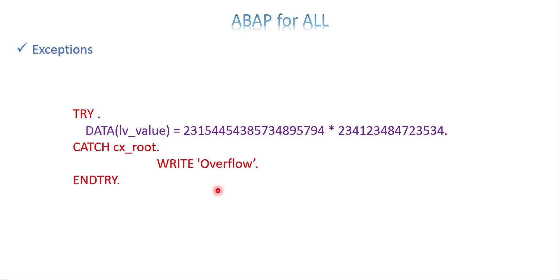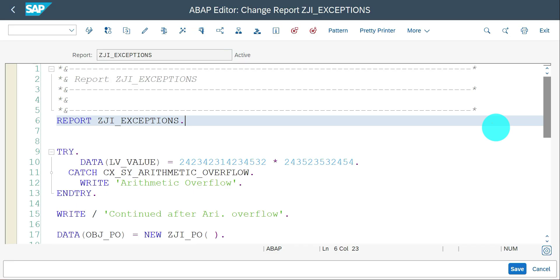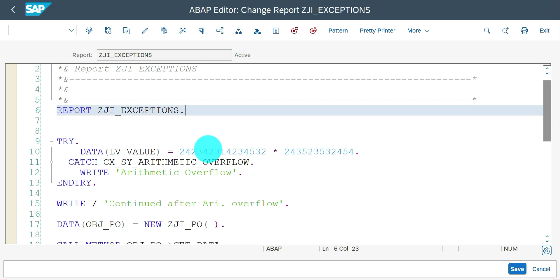There are two processes: process one is how to capture the exception, and process two is what to do next. I've explained only process one here. Process two depends on your need — it could be a message, a write statement, or an email. I will now show you the same in the system and run it a few times to see how the short dump happens and how it is avoided if we have the proper exception capture statement in the code.